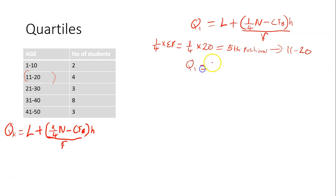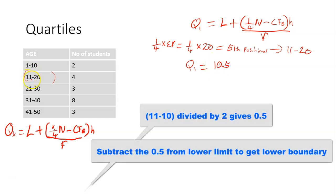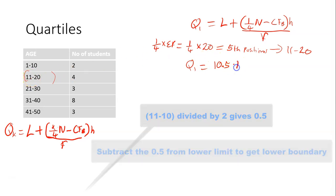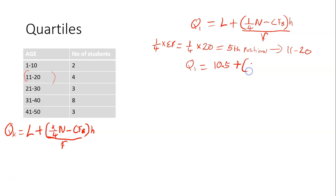To get the first quartile, L means the lower class boundary of the first quartile class. This is the class — what would be the lower class boundary? The lower class boundary would be 10.5; we deducted 0.5 from here. Plus, into brackets, 1 over 4 times N is 1 over 4 times sigma F, which is 5.